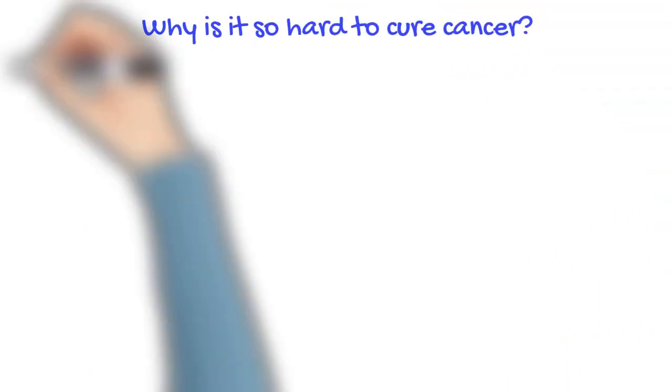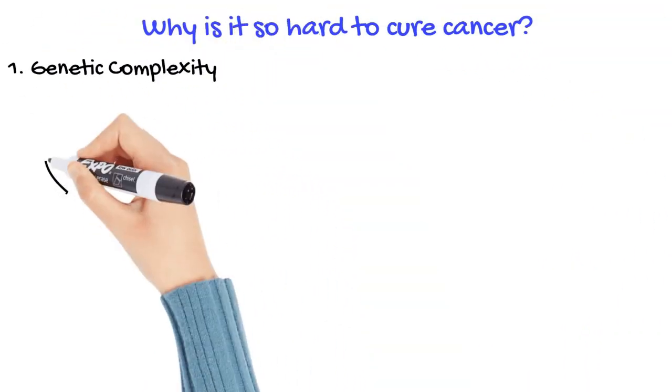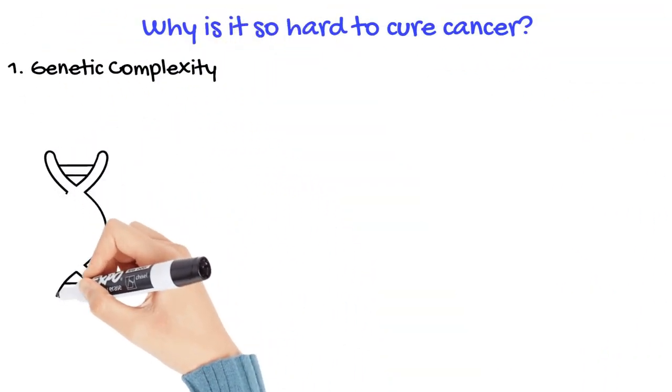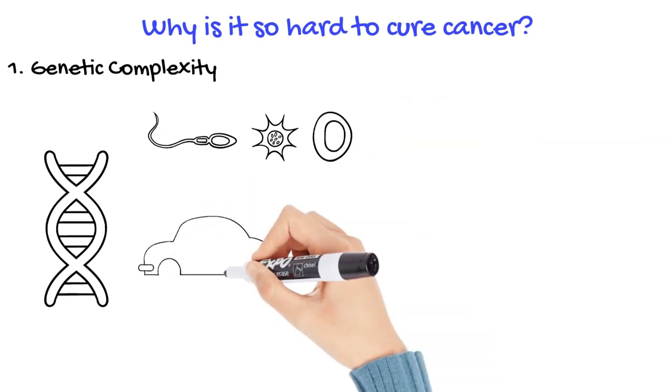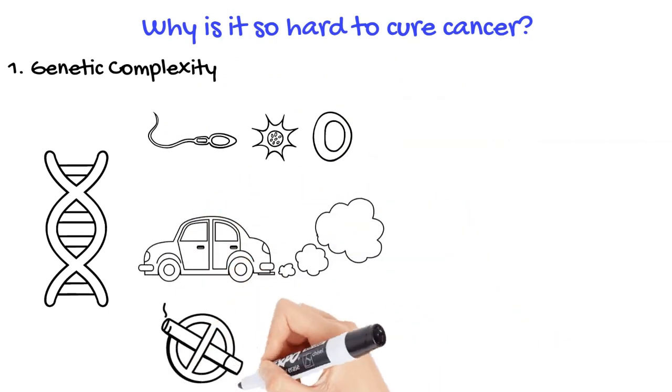First, genetic complexity. Cancer arises from genetic mutations that disrupt the normal control mechanisms of cell growth and division. These mutations can be caused by inherited genes, environmental exposures, or lifestyle choices.